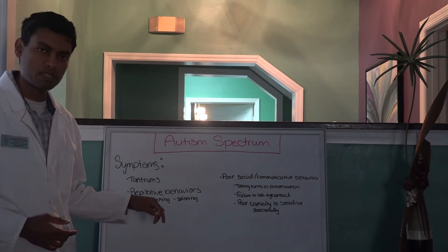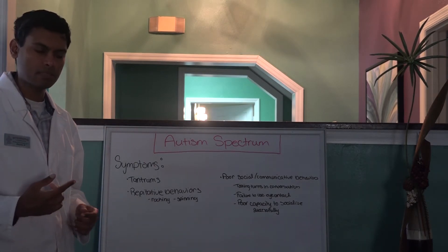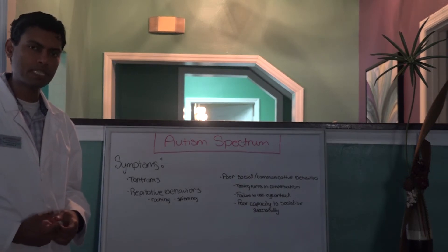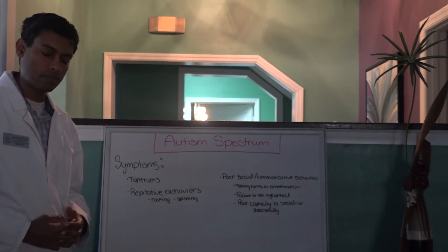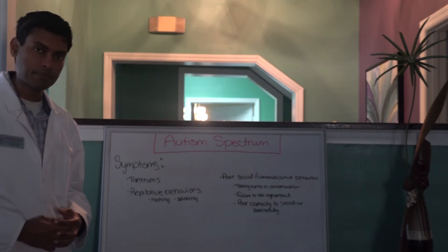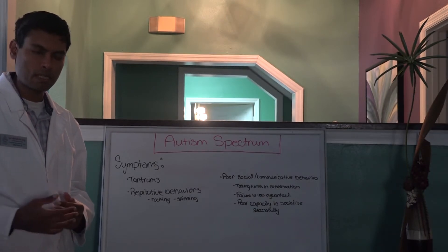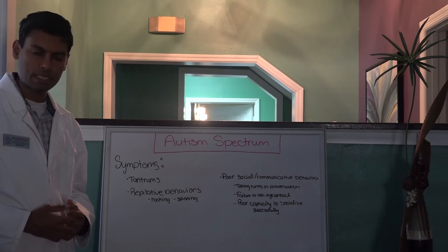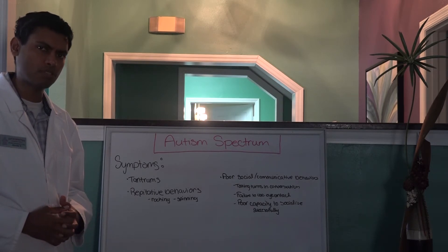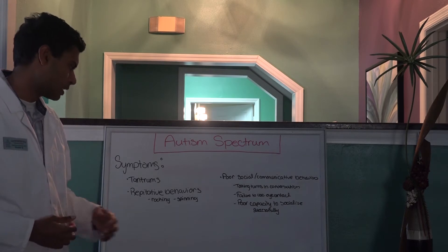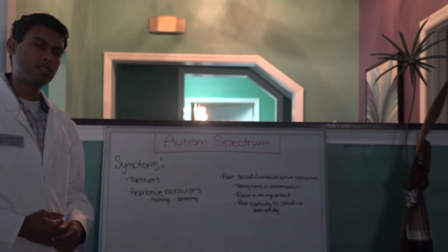They also have a lot of repetitive behaviors. They may be spinning themselves or constantly spinning an object. They may have body rocking — rocking back and forth all the time. In some of the literature, they call this a soothing behavior. If they have pain inside or discomfort, they use this repetitive behavior to soothe themselves. There are multiple other repetitive behaviors that you would notice.